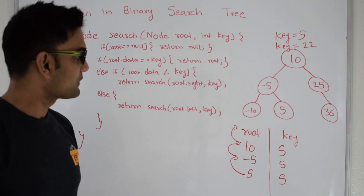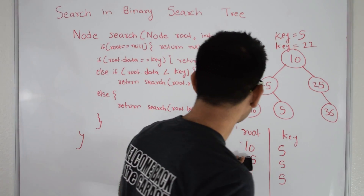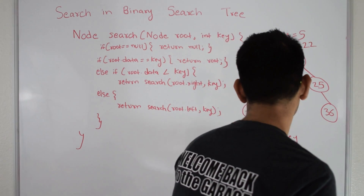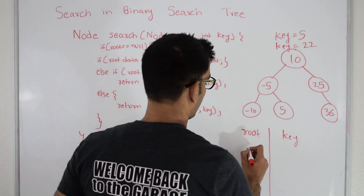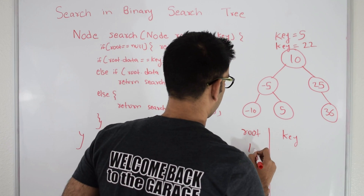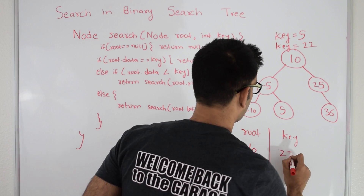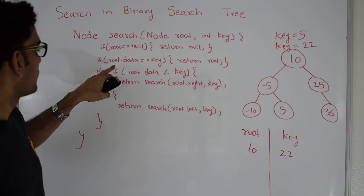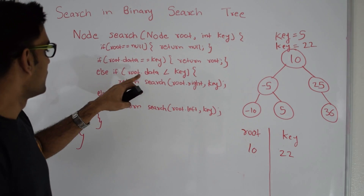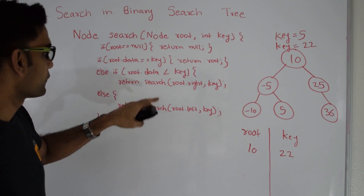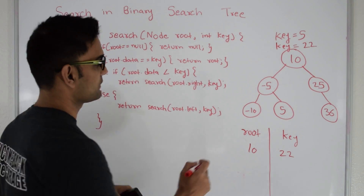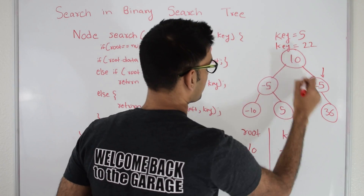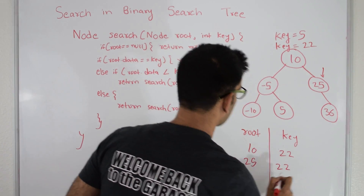Now let's look at example 22 — what happens when we search 22 in this BST. My root is again 10 and I am searching for key 22. Root is not null. Root data is not same as key. Root data is less than key — true. So we go on root's right. Root is now 25, because 10's right is 25, and the key is still 22.